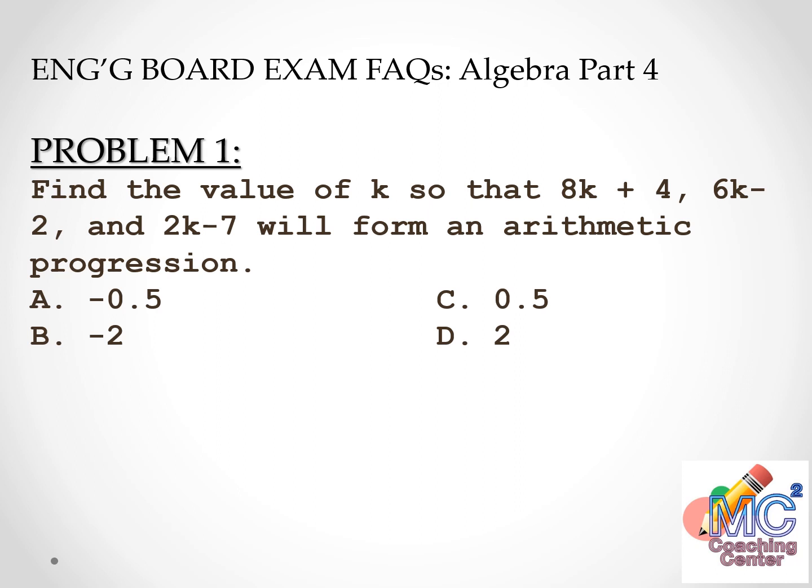Do not forget to click Subscribe to get updates on my new lectures on the channel. Let's start with problem number one of Algebra Part 4. Find the value of k so that 8k plus 4, 6k minus 2, and 2k minus 7 will form an arithmetic progression.